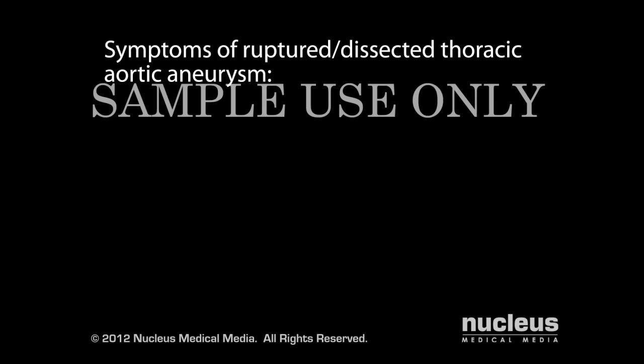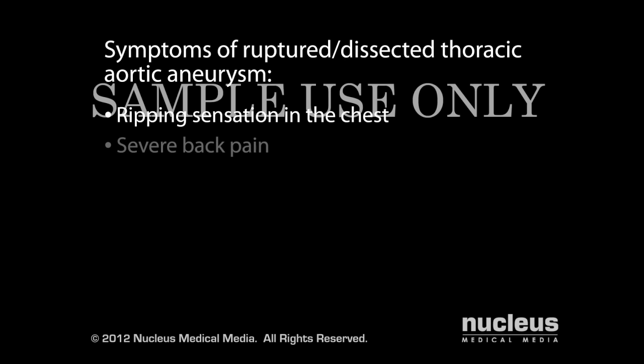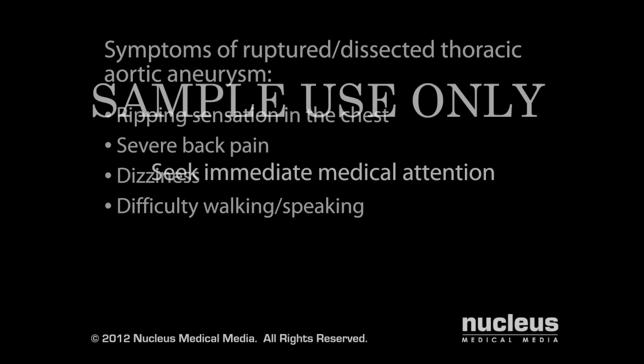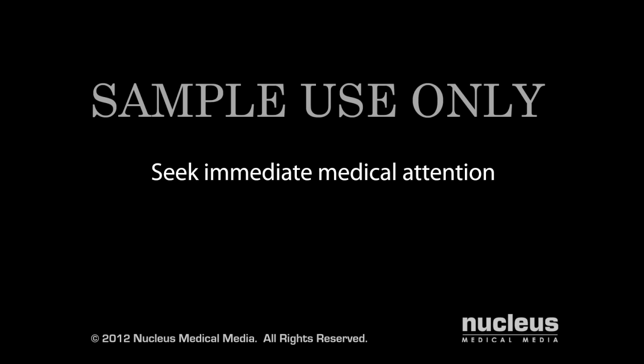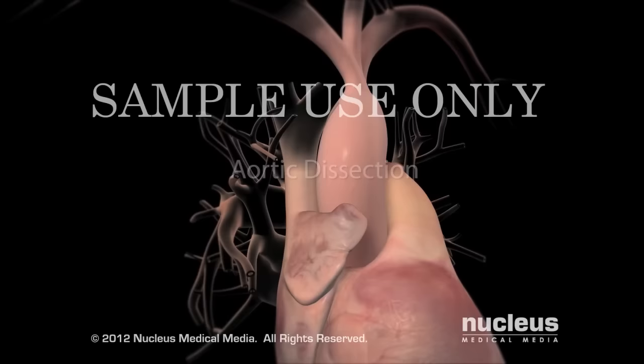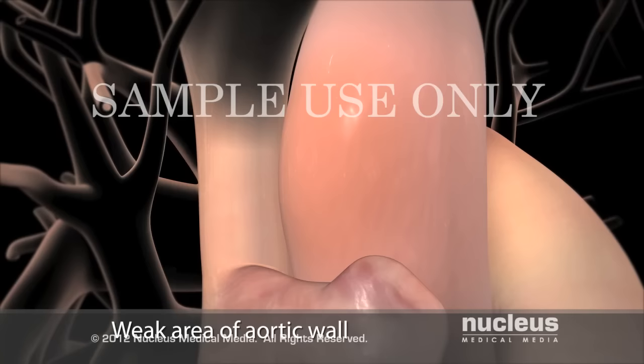If the aneurysm ruptures or dissects, more dramatic symptoms will appear, including a ripping sensation in the chest, severe pain in the back between the shoulder blades, dizziness, and difficulty walking and speaking. If you have these symptoms, you should seek immediate medical attention.